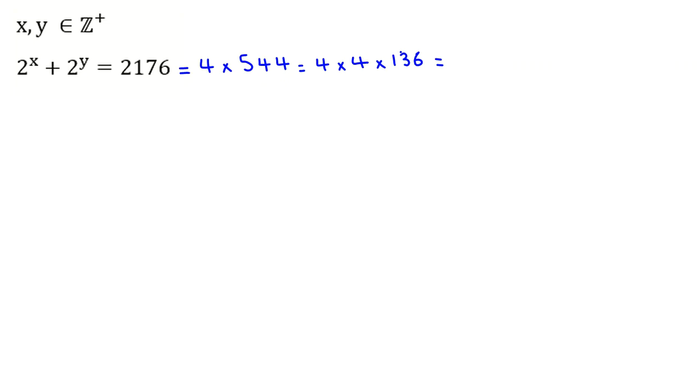We see that 36 is multiple of 4. So if we divide by 4, it's 4 times 34. 34 is 2 times 17. So if we prime factorize, it is 2 to the 7 times 17.